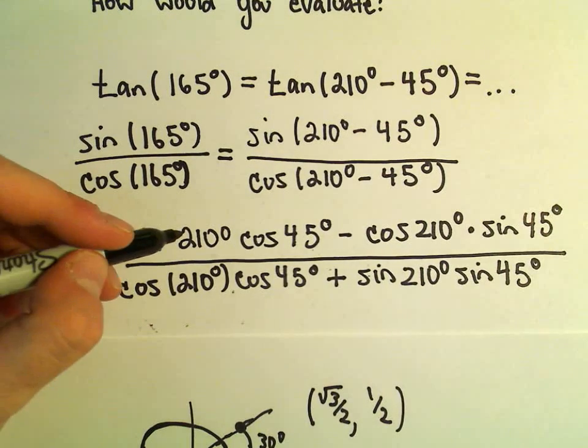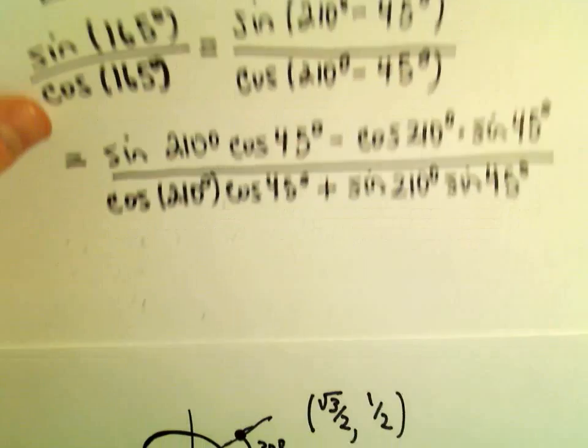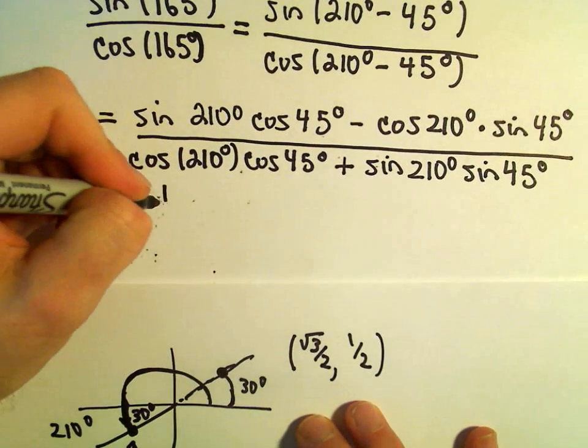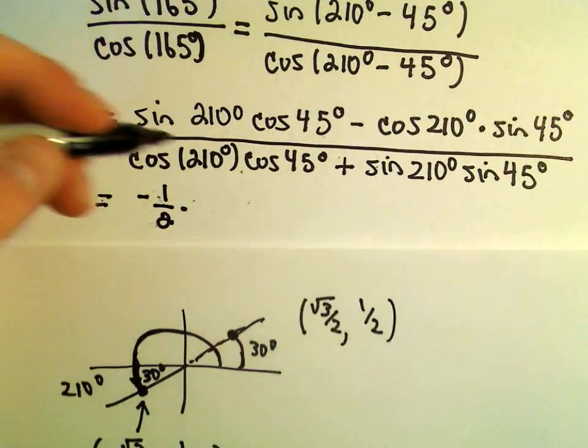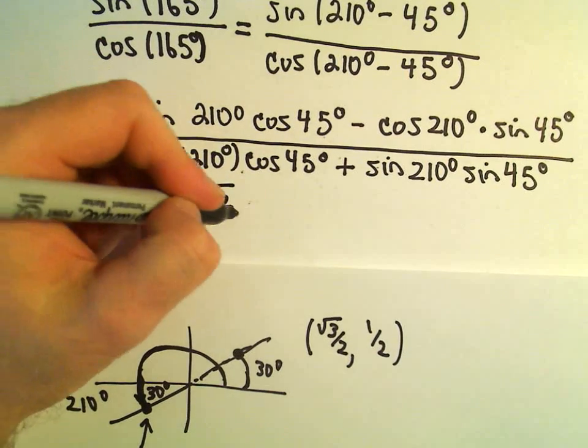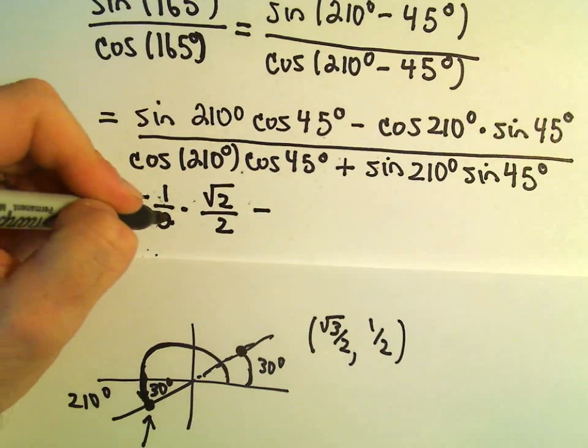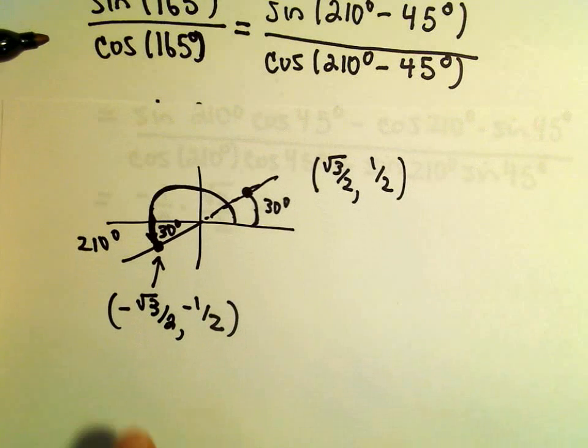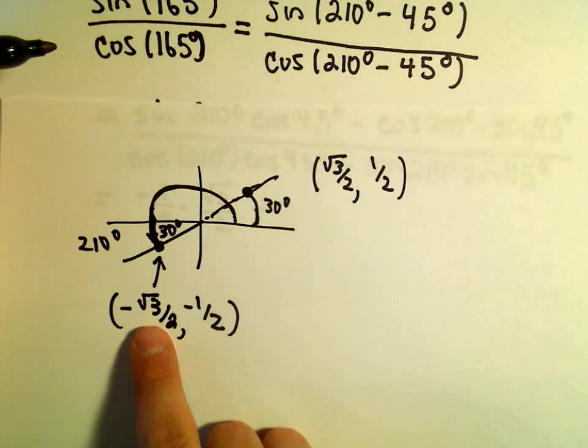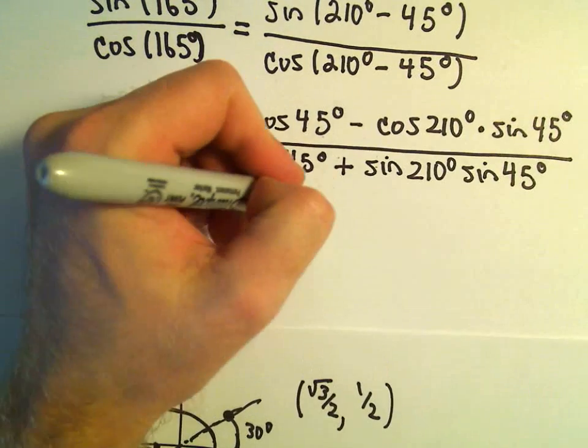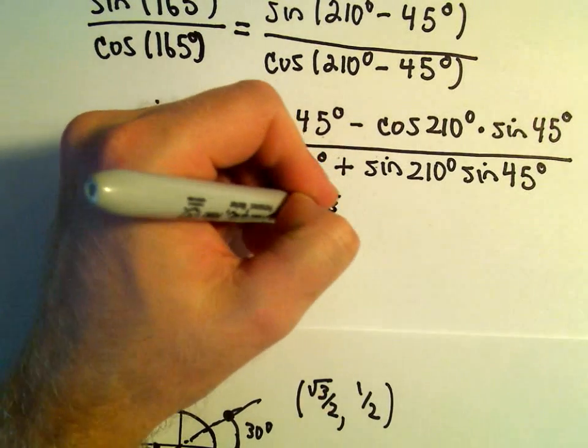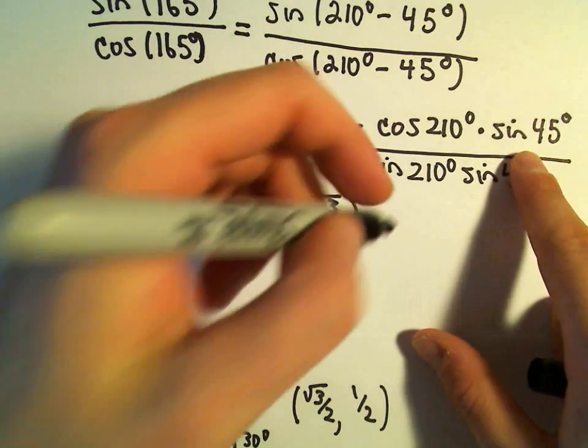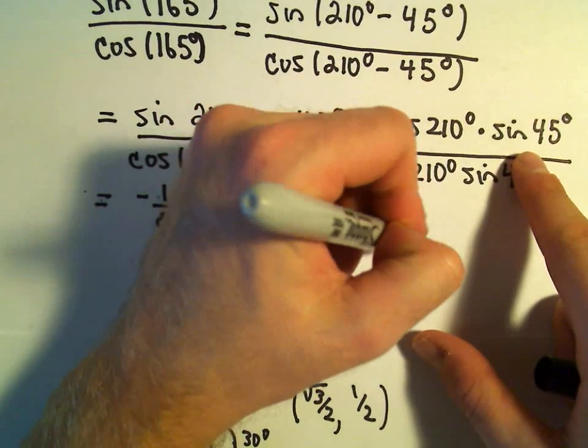So sine of 210 degrees is going to be the y-coordinate, which is negative 1 half. Cosine of 45 degrees, that's just root 2 over 2. Minus cosine of 210 degrees, which is going to be negative root 3 over 2. And sine of 45 degrees, that's simply going to be square root of 2 over 2.